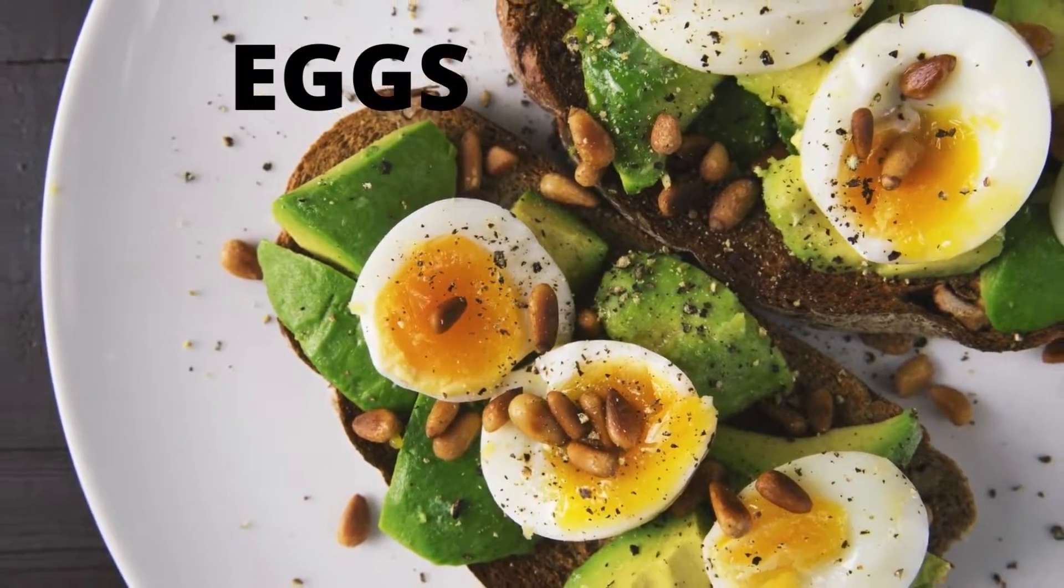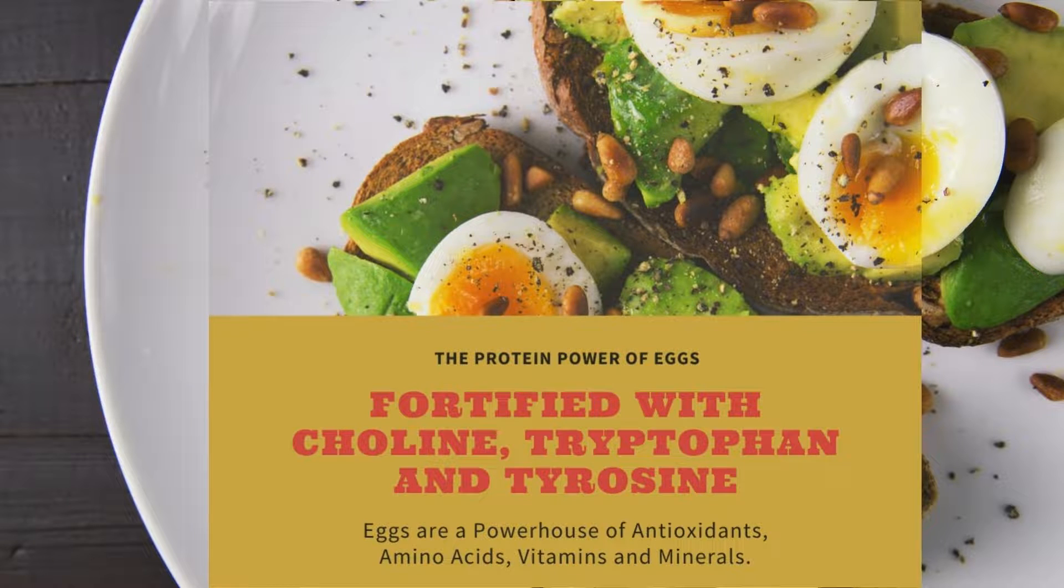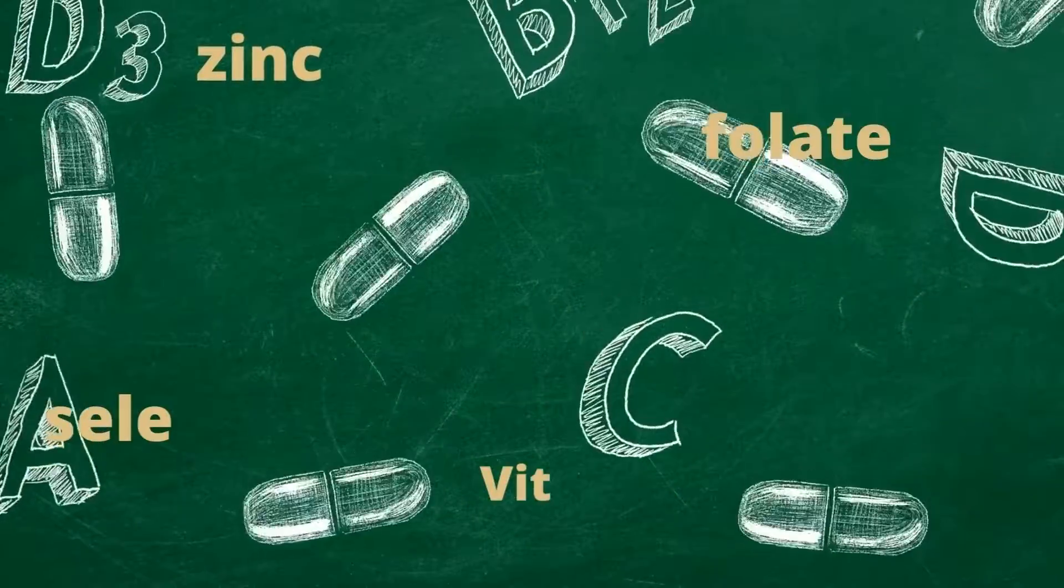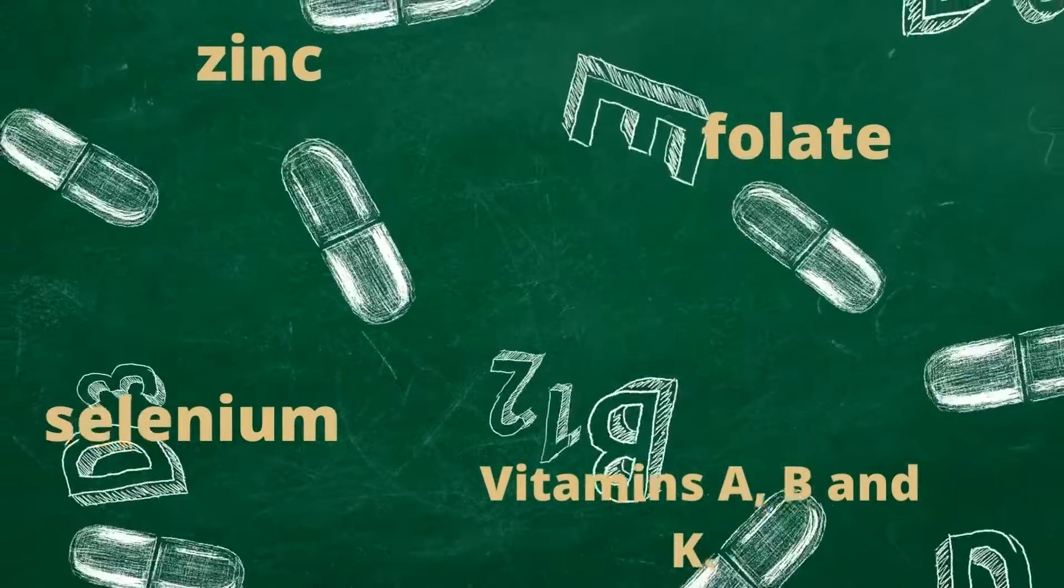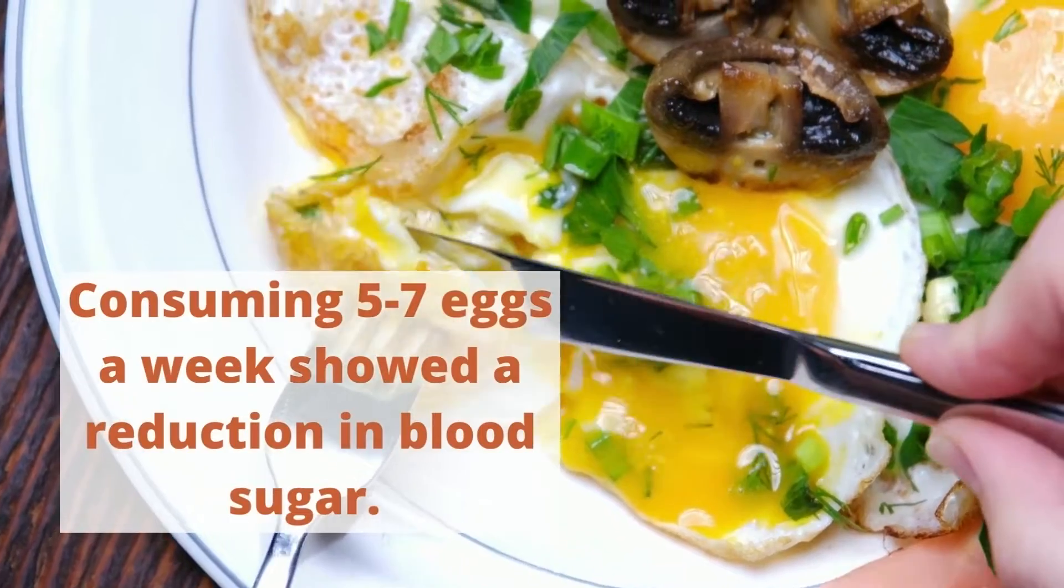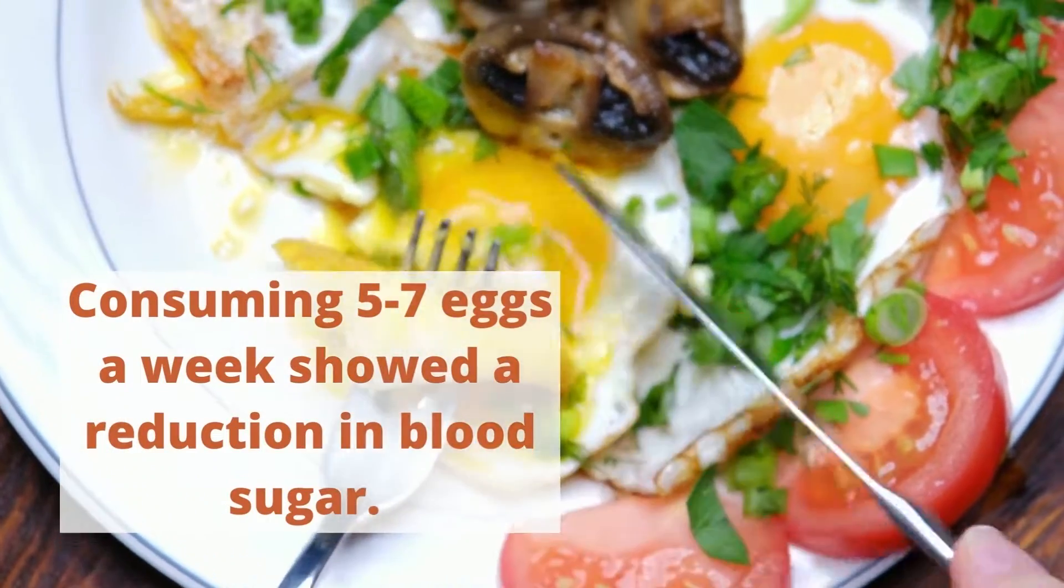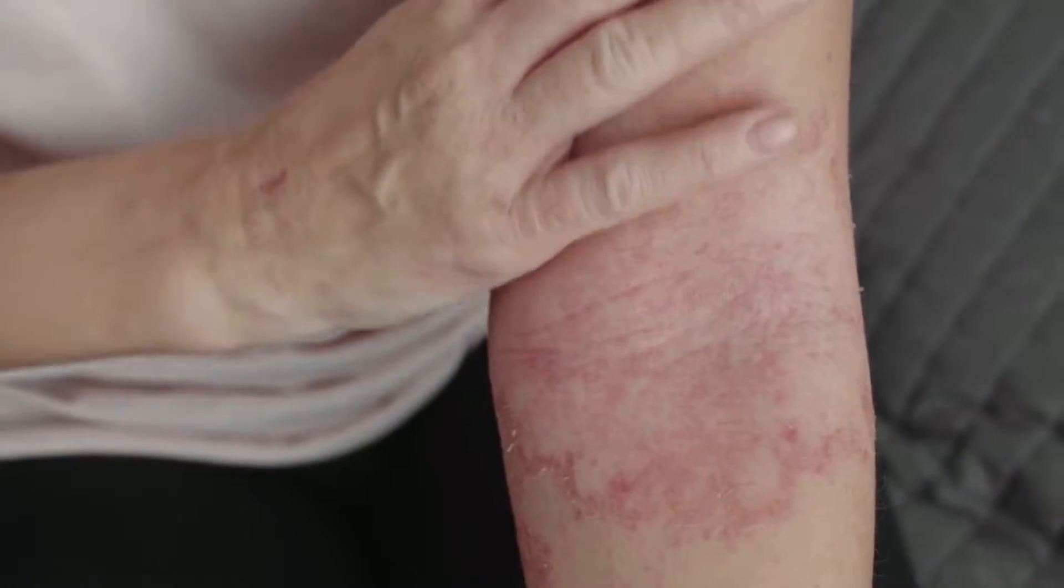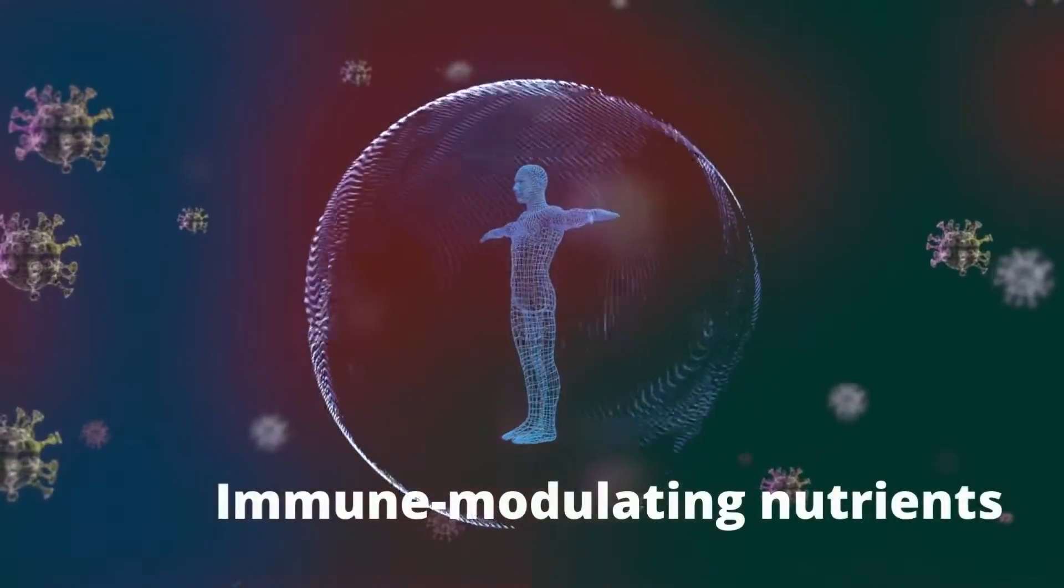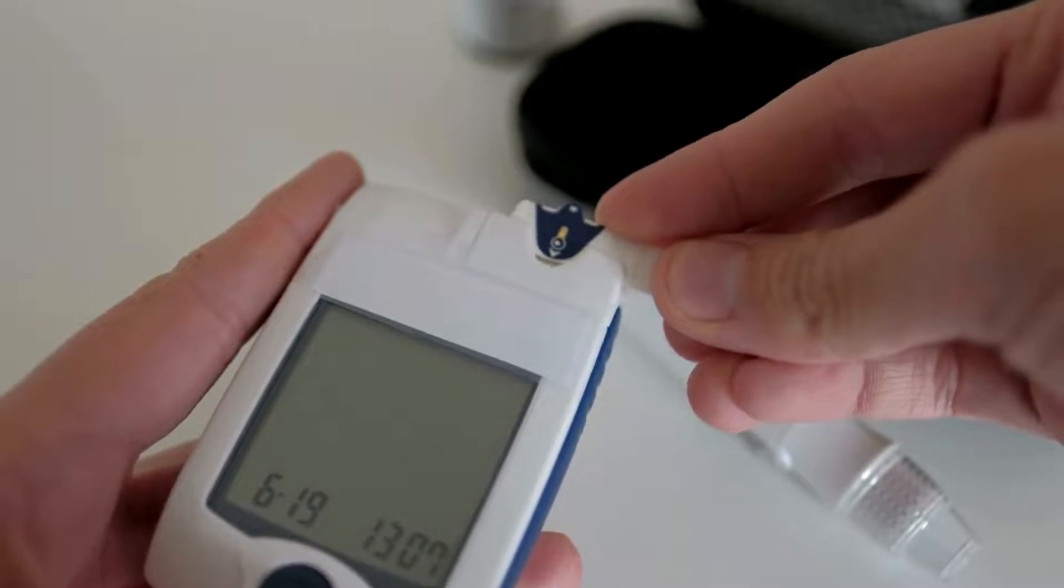Eggs. Eggs are high in zinc, folate, selenium and vitamins A, B and K. In several studies, people with diabetes who consumed five to seven eggs a week showed a reduction in blood sugar. Eggs nutrients boost immunity, reduce risks of allergies due to its immune modulating properties, raise good cholesterol and are an excellent source of protein to keep blood sugar levels stable.